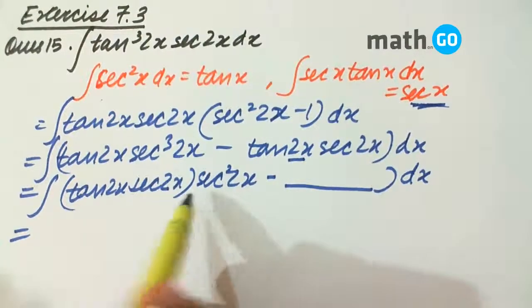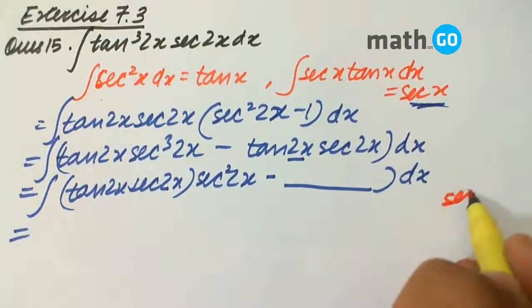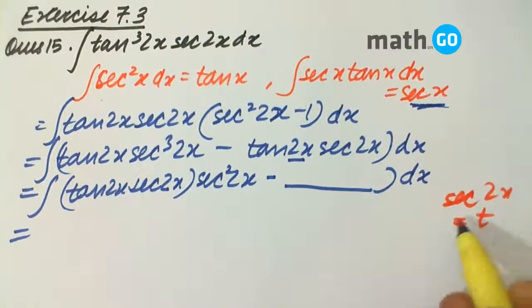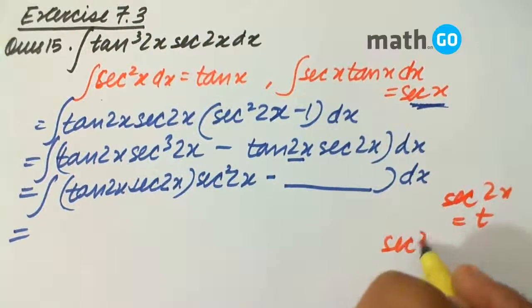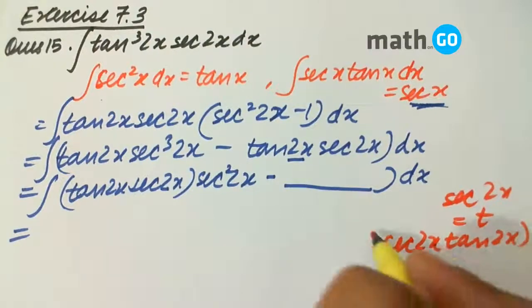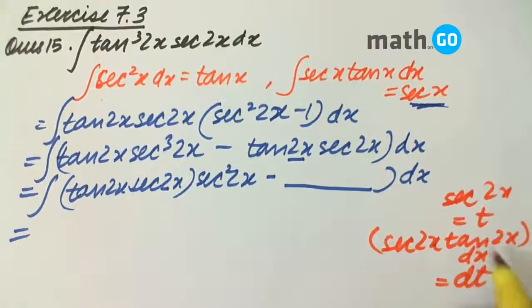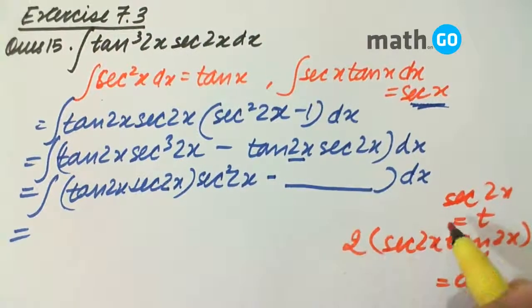we can take sec 2x as t, as we have done in earlier substitution questions. We take sec 2x equals to t, giving us sec 2x into tan 2x dx equals to dt. Don't forget to multiply this 2.